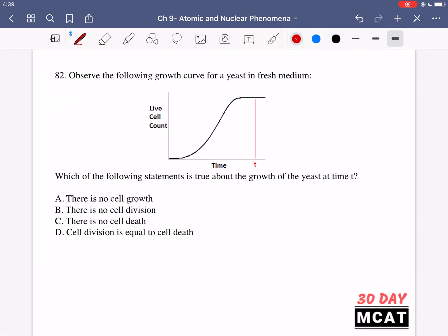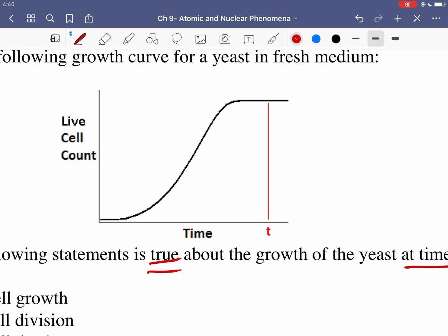In question 82 it says observe the following growth curve for a yeast in fresh medium. Which of the following statements is true about the growth of the yeast at time t? So looking at this y-axis is giving us a live cell count. So we get more cells as time goes on and you see over here that there's kind of a plateau. So there was no growth at the beginning but then growth and then after the growth phase we have a plateau.